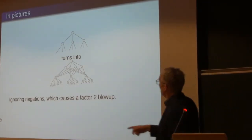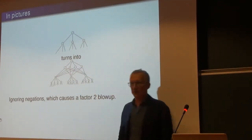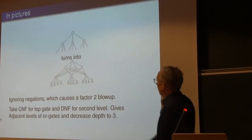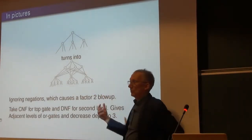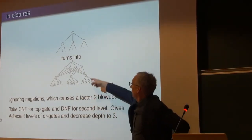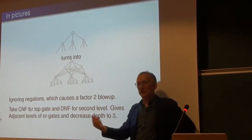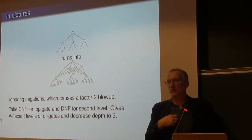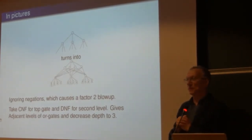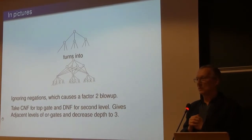There's a subtlety: parity can be expressed both as AND-of-ORs and OR-of-ANDs. If you use AND-of-ORs at one level and OR-of-ANDs at another, you get two levels of ORs next to each other which you can collapse — making this into depth 3. That's the trick.